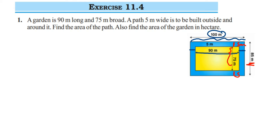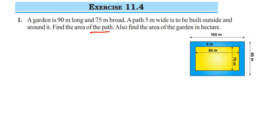Now we have to find out the area of the path and the area of the garden in hectares. First, we're going to find the area of the path. To do that, we're going to find the area of the entire garden along with the path.